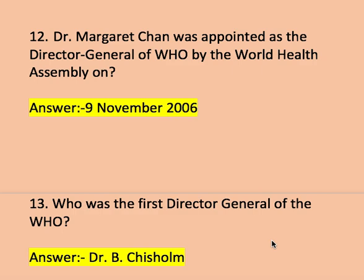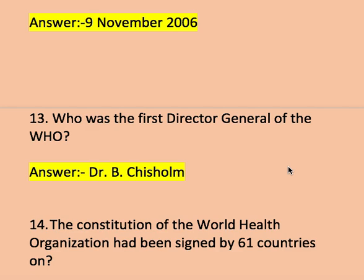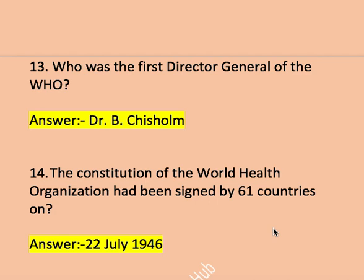Next question, question number fourteen: the constitution of the World Health Organization had been signed by 61 countries on 22 July 1946. WHO also established six regional organizations — Southeast Asia, Africa, America, Europe, Eastern Mediterranean, and Western Pacific — with one regional headquarters in Manila, Philippines.